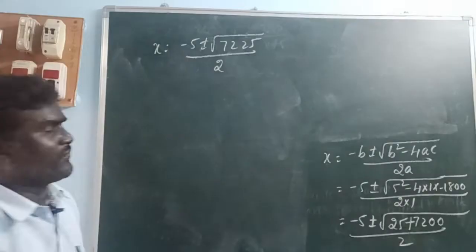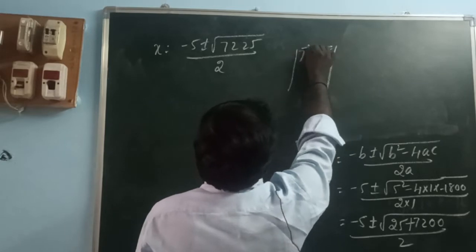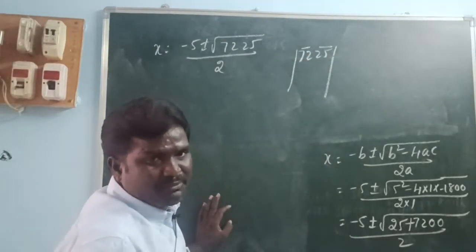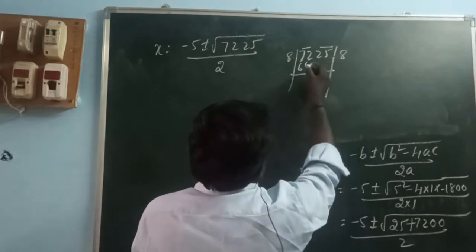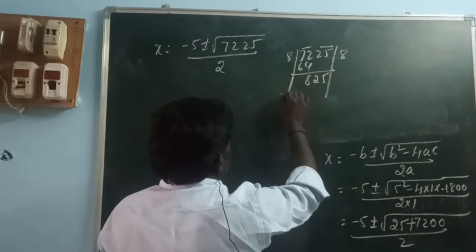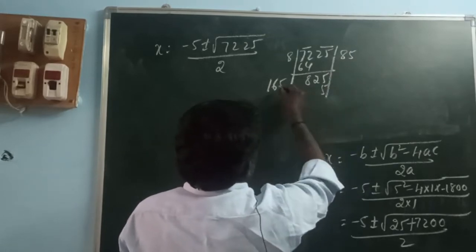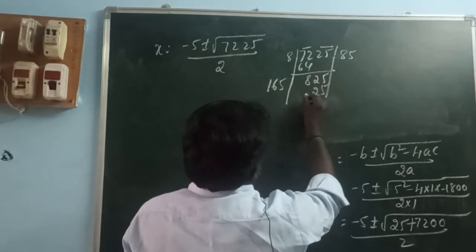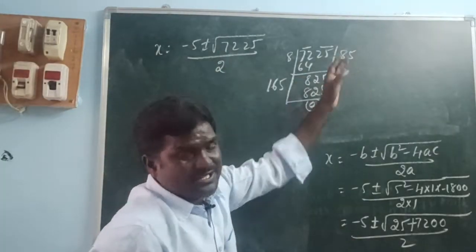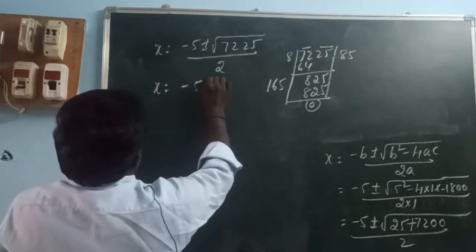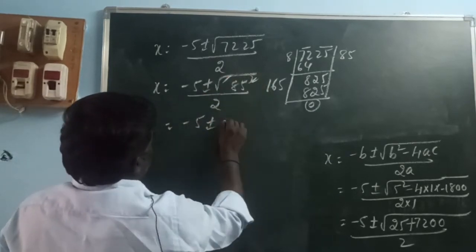We find the square root of 7225 using the division method. Put a dot for every 2 digits. For 72, the nearest perfect square is 64 (8×8). 72 − 64 = 8, bring down 25. Double 8 is 16. Try 165 × 5 = 825. The remainder is 0. So √7225 = 85. Therefore x = (−5 ± 85) / 2.